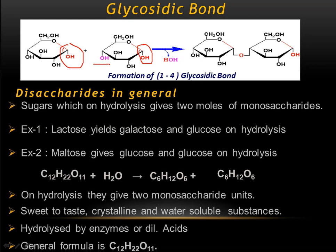In glycosidic bond formation, C1 of one sugar is linked with C4 of another sugar. See — this is the first carbon, second, third, and this becomes the fourth carbon, fifth carbon, and sixth carbon. In this example, C1 of one monosaccharide is linked to the C4 carbon of another monosaccharide, forming the glycosidic bond. This bond is called the 1-4 glycosidic linkage — '1' means C1 of one sugar, '4' means C4 of another sugar.